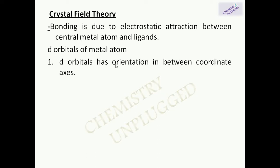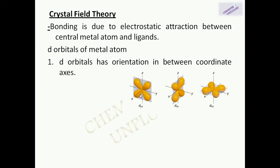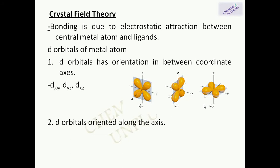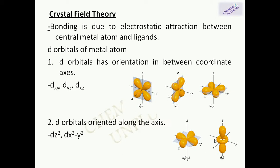There are two types of d orbitals in a metal atom. The first type has orientation in between the coordinate axes — these are the three d orbitals dyz, dxz, and dxy. The second type has orbitals oriented along the x, y, or z direction — these are the dx²-y² and dz² orbitals. In a free metal atom, all five d orbitals are of the same energy, meaning they are degenerate.